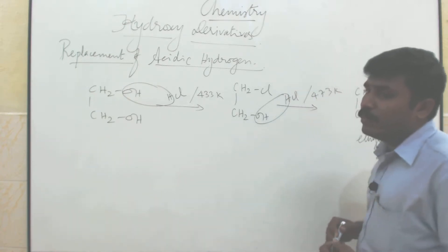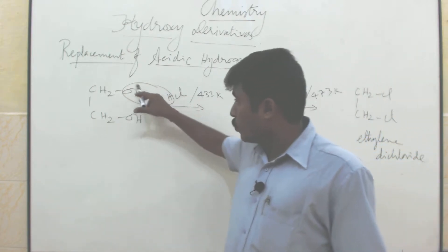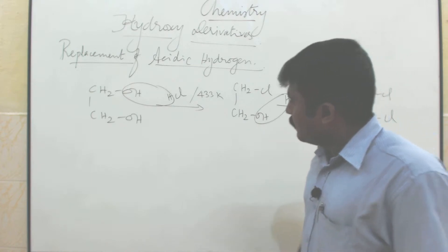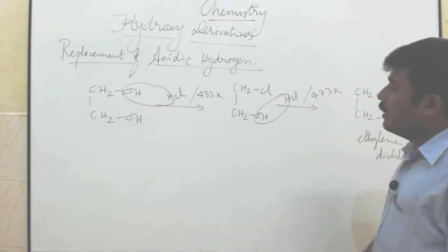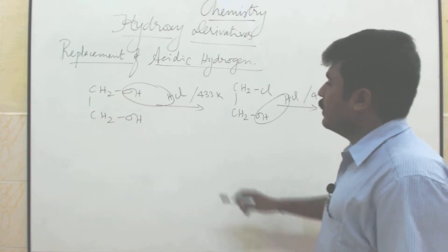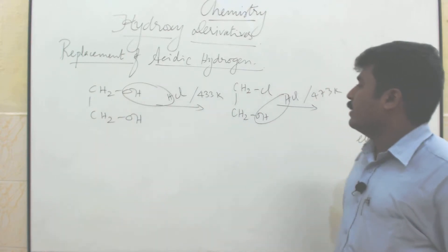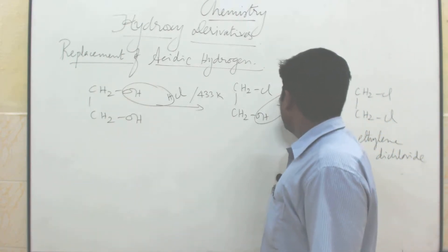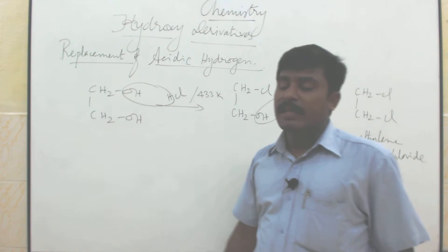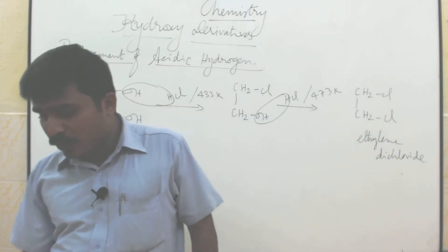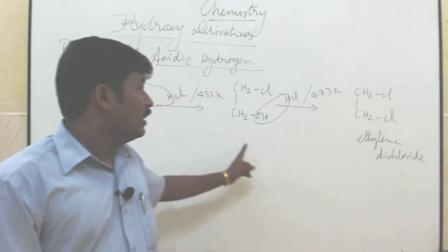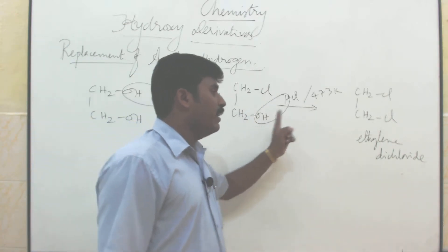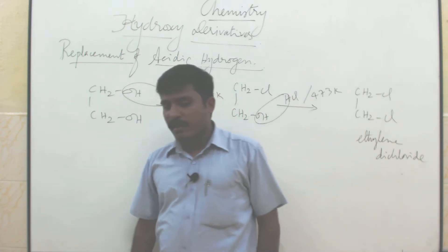We removed the OH group. Initially, ethylene glycol reacts with mineral acid like HCl at 433 Kelvin — removal of one OH group, removal of water, Cl is added: monochloroethylene glycol. Then again HCl, removal of water, one more Cl is added — namely ethylene dichloride. This intermediate is ethylene chlorohydrin.